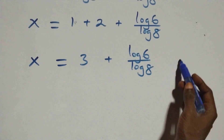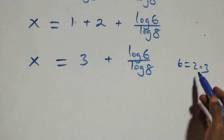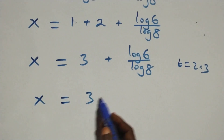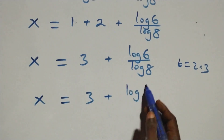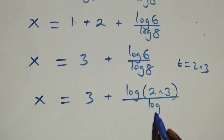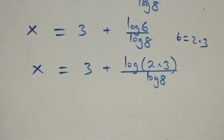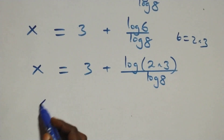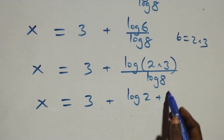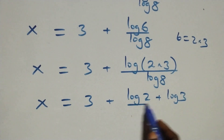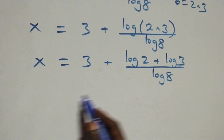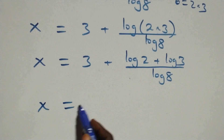We can write 6 as 2 times 3, so x equals 3 plus log(2 times 3) over log 8. Applying the logarithm product rule again, this becomes x equals 3 plus log 2 plus log 3, all over log 8.